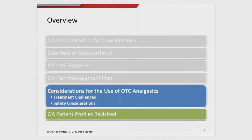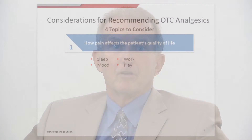So we have an idea of what treatment options we have. How do we use them? What factors need to be addressed in making the proper selection? I've got four areas that I consider when I treat OA patients.